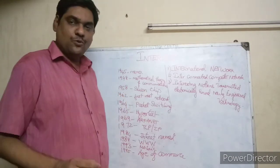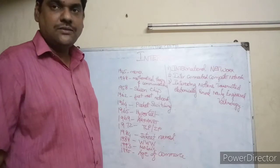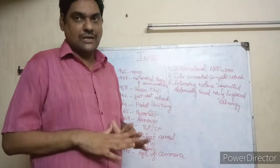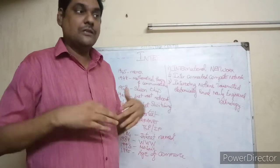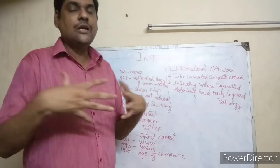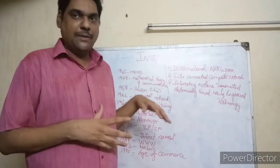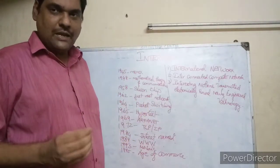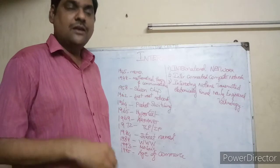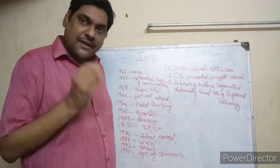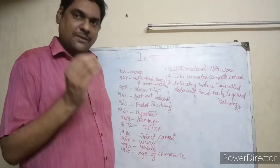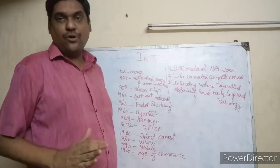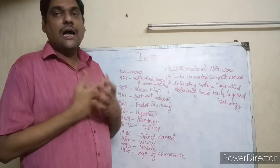After 1962, the first vast network was created — a network that connected computers over a long distance. That happened in 1962. After that, in 1964, the concept of packet switching was introduced in computer networks.